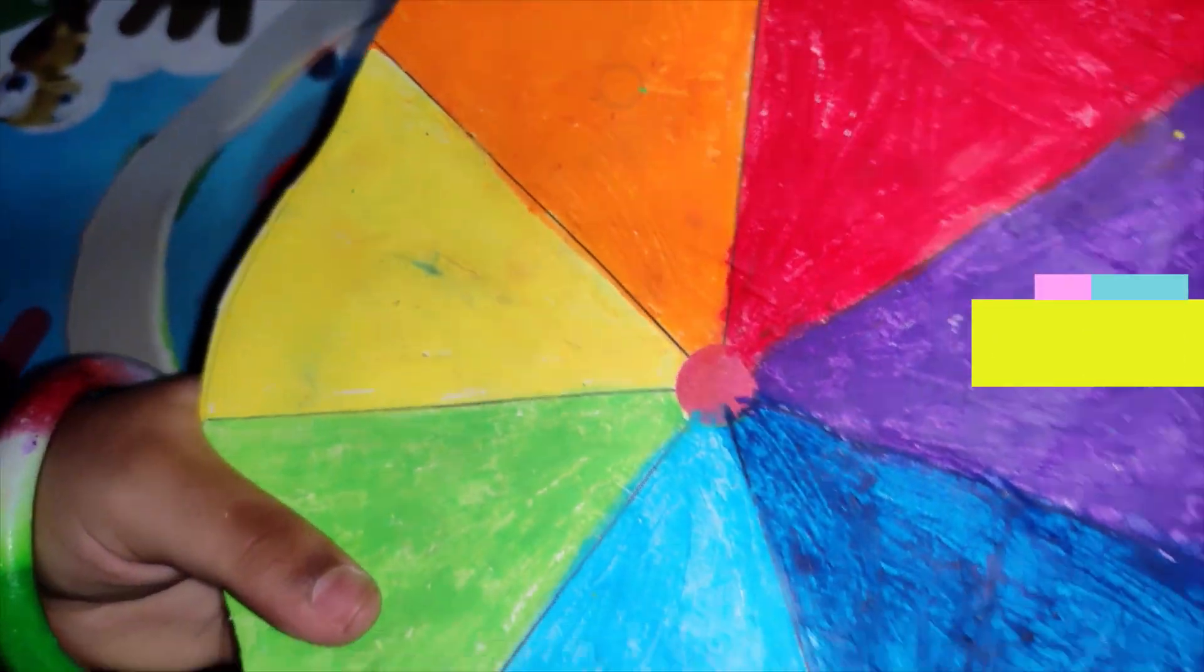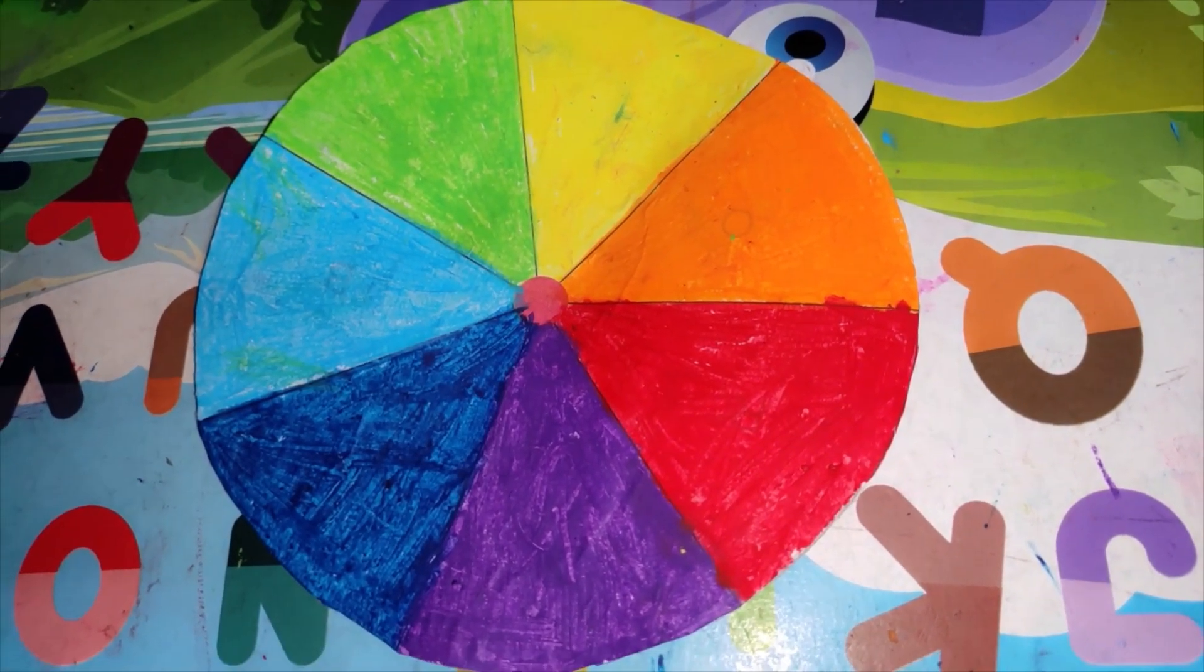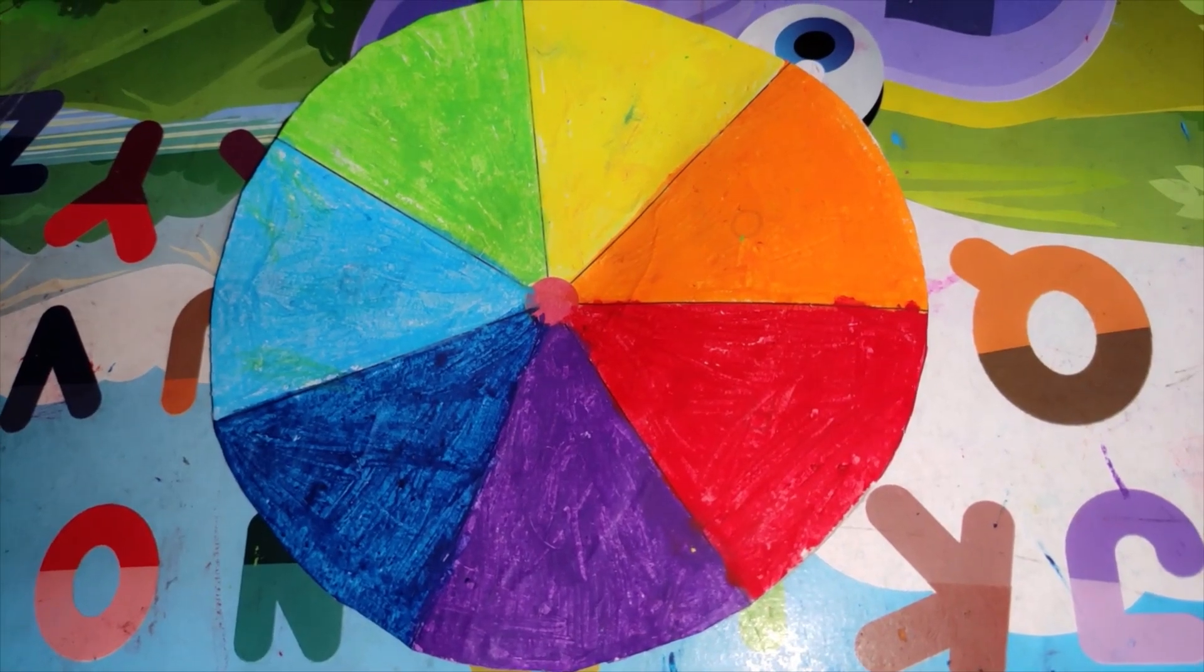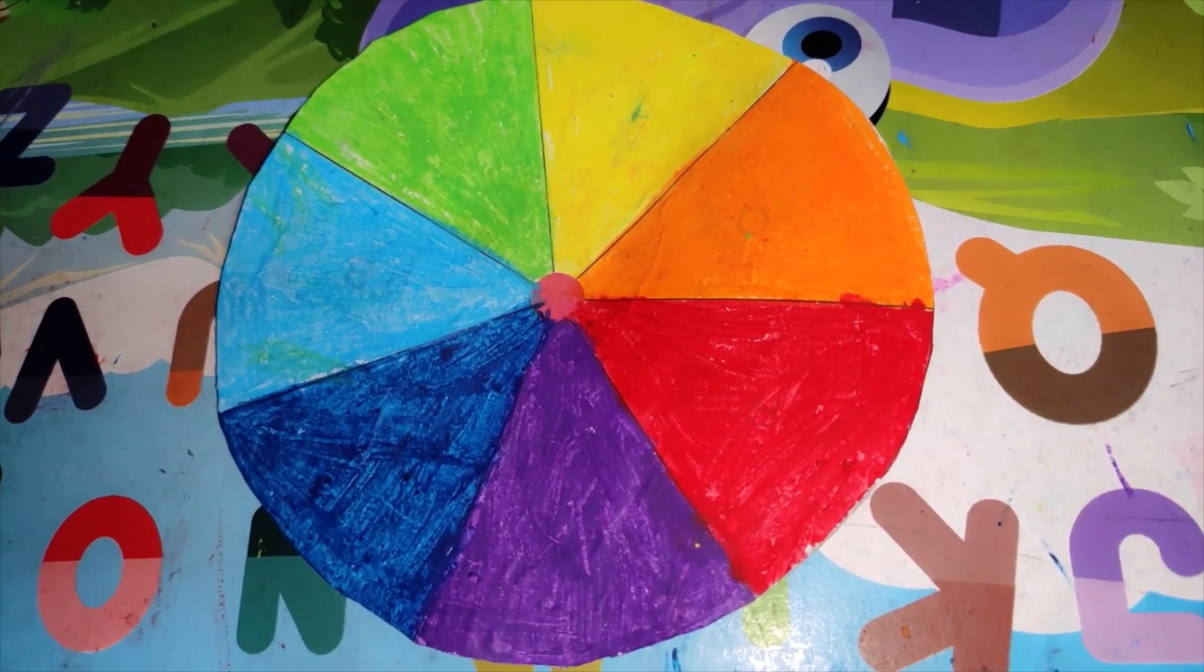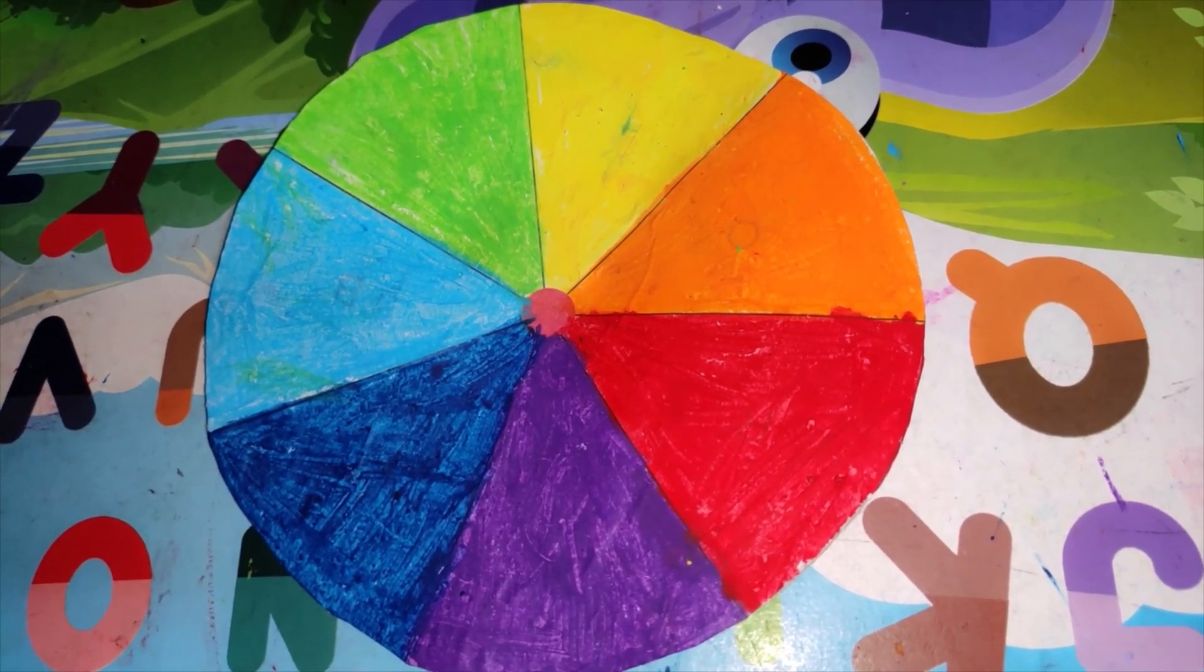This is a magic wheel. It's a circular shape. A circle has no sides and no corners, and it is round and round.